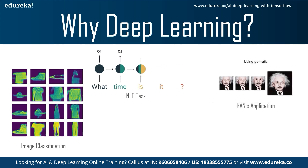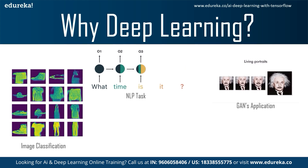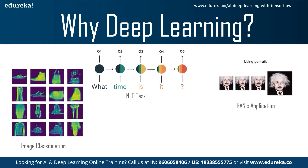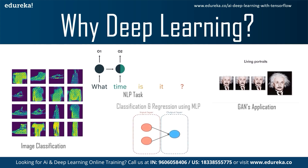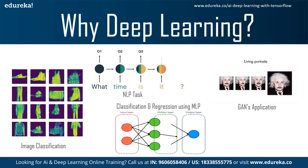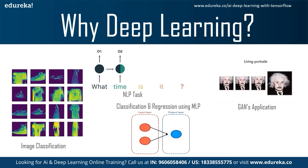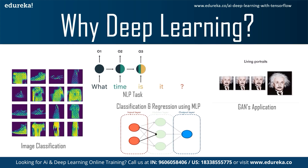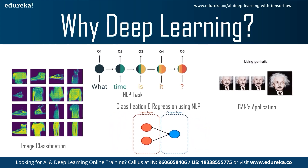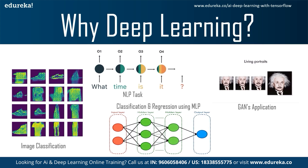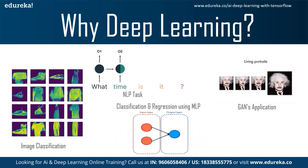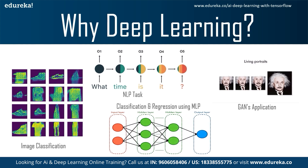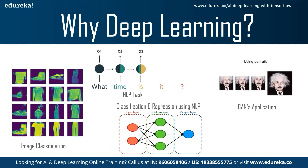GANs — Generative Adversarial Networks — is an unsupervised part of deep learning, with common applications including deep fakes and more. Finally, we have classification and regression tasks using multilayer perceptrons. In machine learning, we had algorithms like decision trees, random forests, linear regression, or logistic regression. But when we perform classification using MLP or multilayer perceptron, we get very high accuracy even compared to SVMs and decision trees.